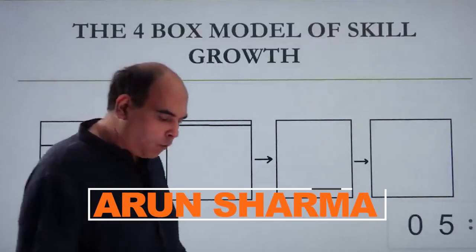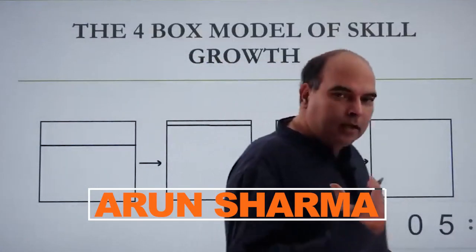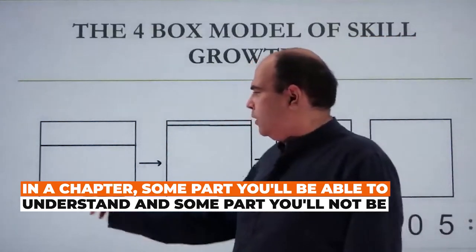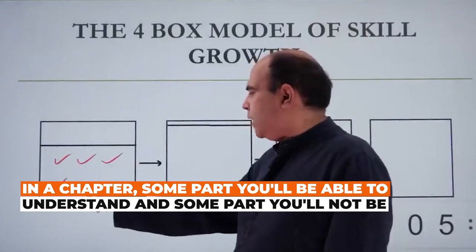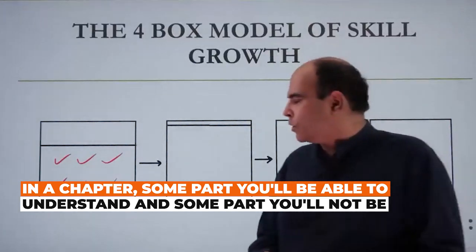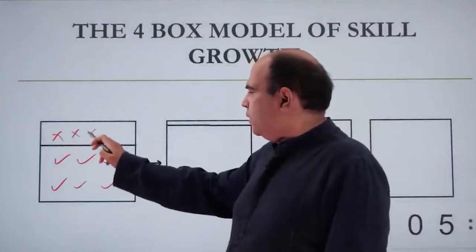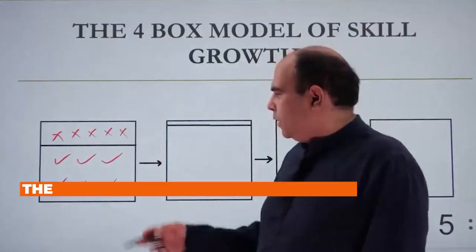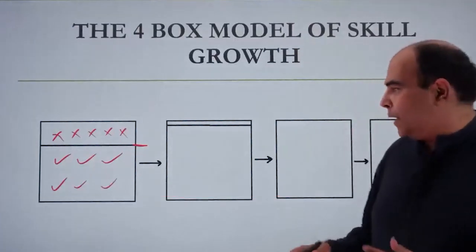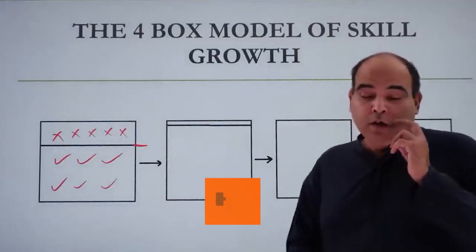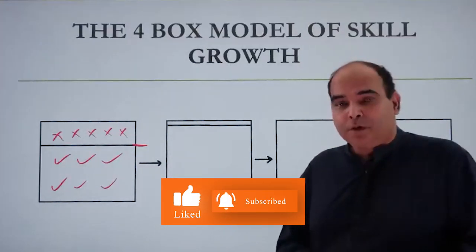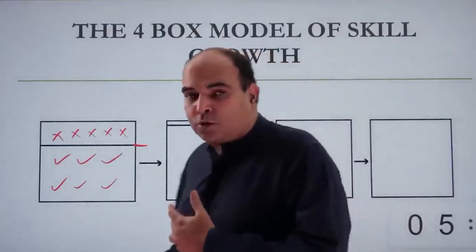When you talk about problem-solving ability in Quants or even in DILR, there's something called a four box model. Initially when you enter a chapter, some part of it you will be able to understand — maybe you do the theory once — and some part of it you will be able to react to and solve yourself, and some part you will not. This is the starting box, and what this level will be depends on your starting skills and the difficulty level of questions you're picking up. If you pick up very difficult questions and your starting skills are poor, this might just be 40-50 percent.